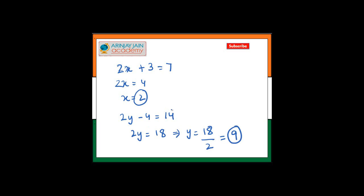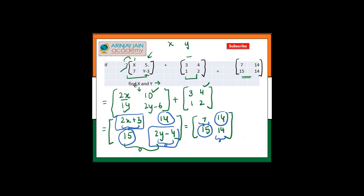So x is equal to 2, y is equal to 9 and that is your answer. That's what you were supposed to find out. You had to find out the value of x and y.